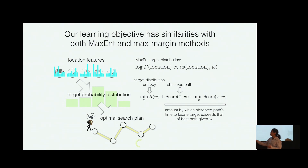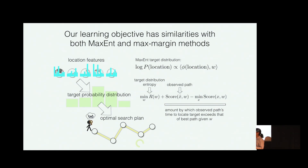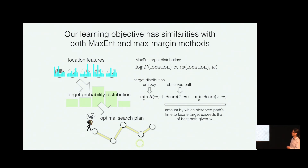Logistic regression would be the model where we assume we observe a sample from this target probability distribution. But we don't actually observe where the target was located — all we have are these paths. So you can think of it as a latent logistic regression model where instead of observing the distribution directly, we observe an optimal search tour with respect to this distribution.